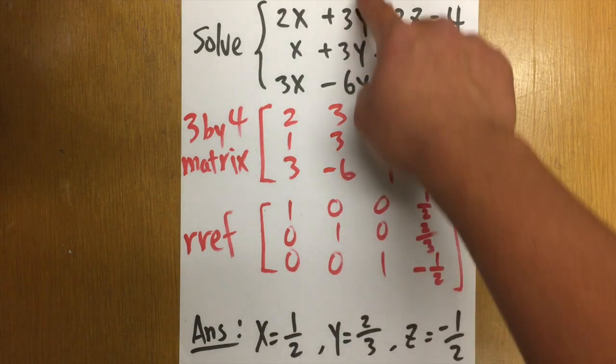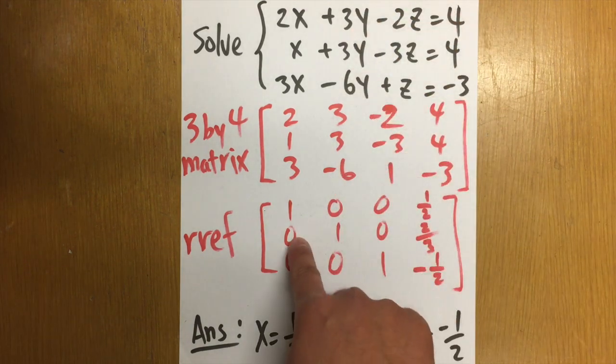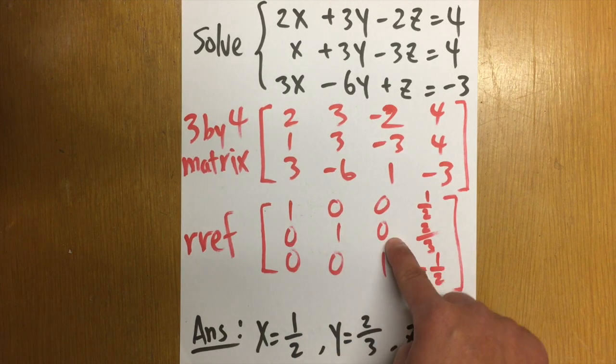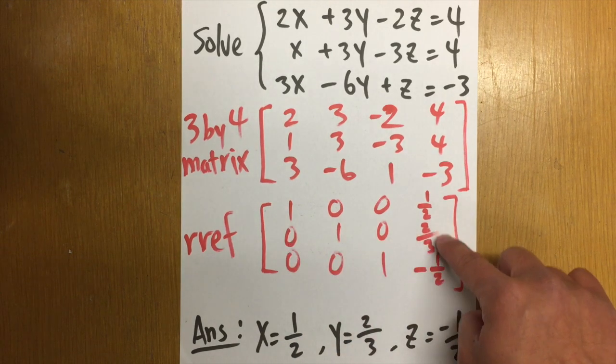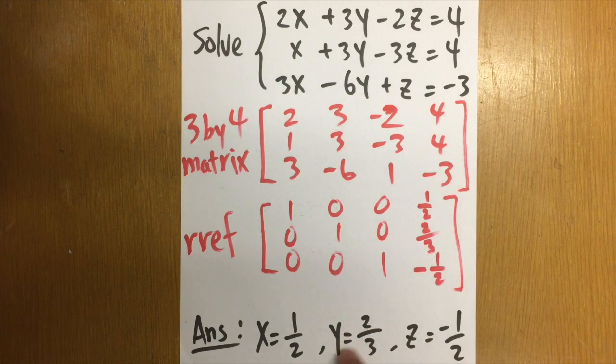Likewise, this right here is the Y column. So that means we have 0 X, 1 Y, 0 Z. And this is equal to 2 thirds. So Y is equal to 2 thirds.